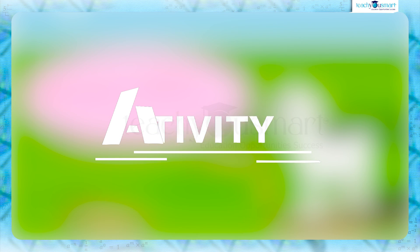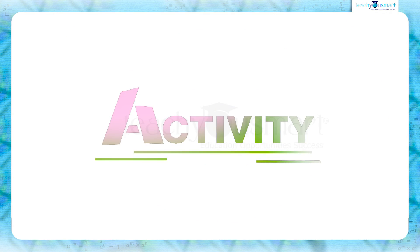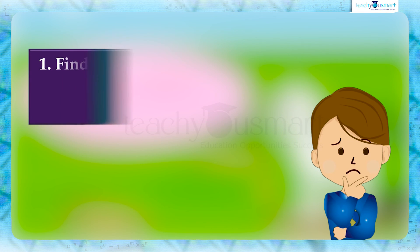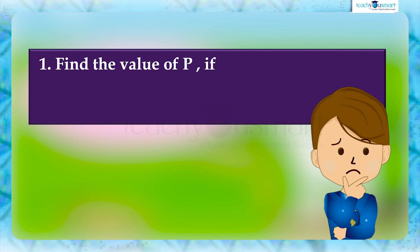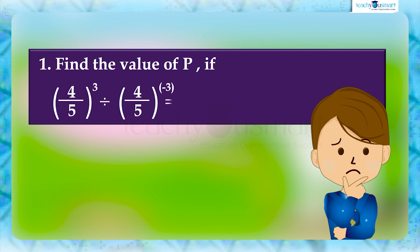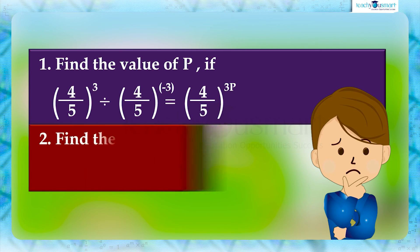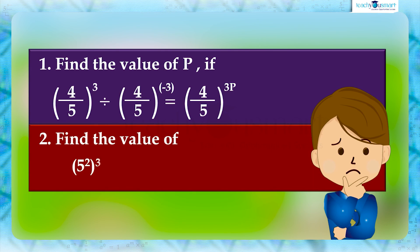Before winding up, let's check how much you understood by doing an activity. First, find the value of p if (4 by 5) the whole cube, divided by (4 by 5) the whole raised to minus 3, equals (4 by 5) raised to 3p. Second, find the value of (5 squared) the whole cube plus (2 by 5) the whole 4, raised to 0, plus 5 raised to 5.